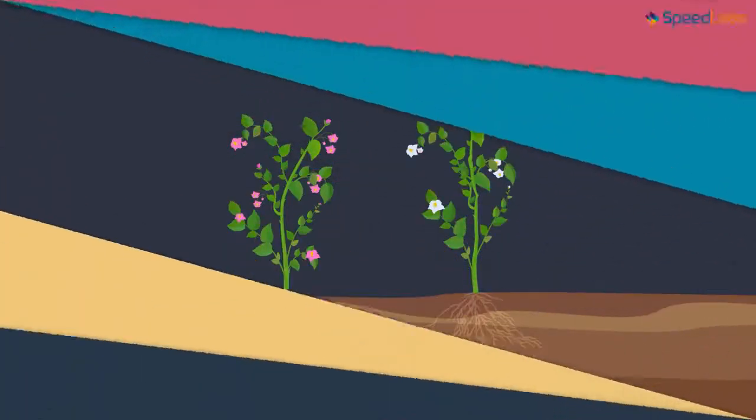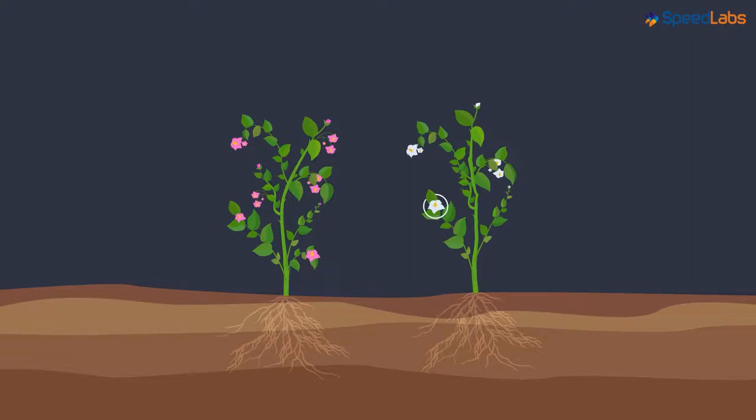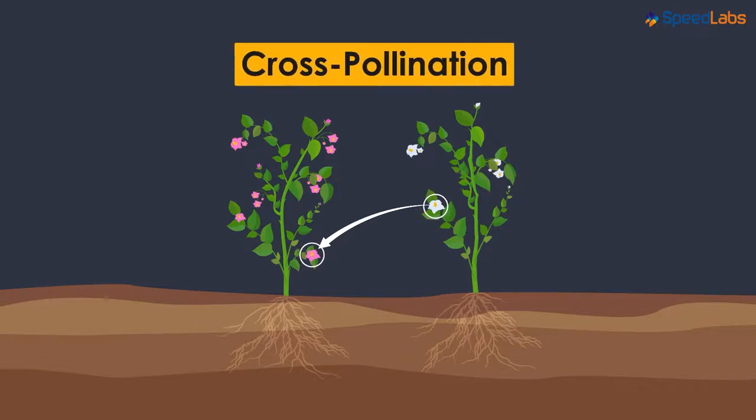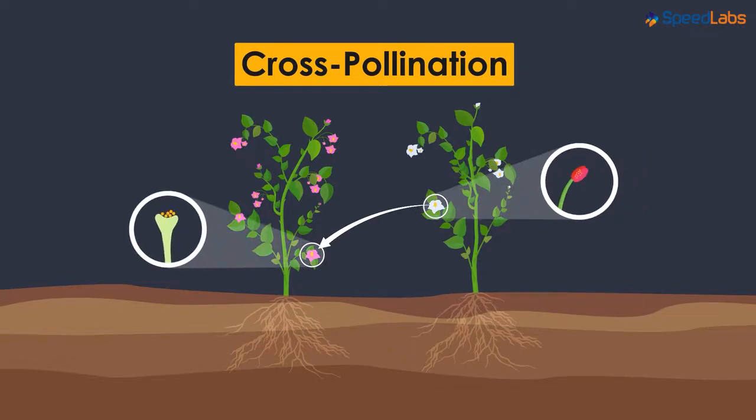Now imagine the transfer of pollen grains occurring between this flower and another flower found on a different plant. This pollination is called cross-pollination. This means the pollen grains travel from the anther to the stigma of a flower present on a different plant.